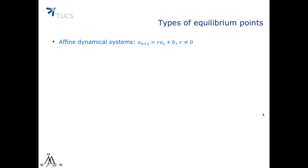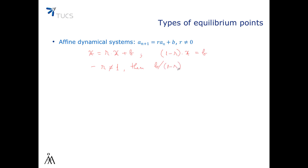Let's consider a general linear dynamical system: An+1 equals r times An plus b, for some r different than zero. To look for equilibrium points, we will have to solve the equation x equals r times x plus b. In other words, the equation is (1 minus r) times x equals b. So if r is different than 1, then b over (1 minus r) is the only equilibrium point.